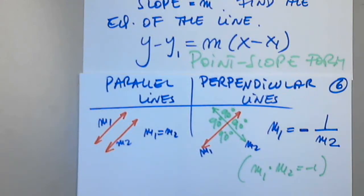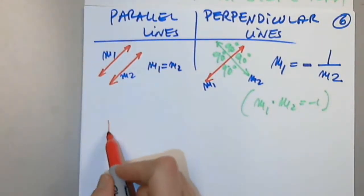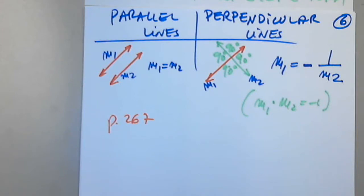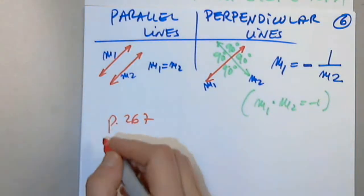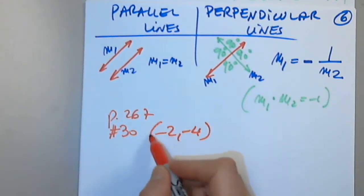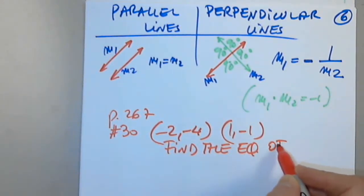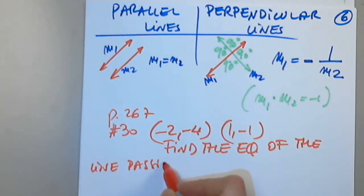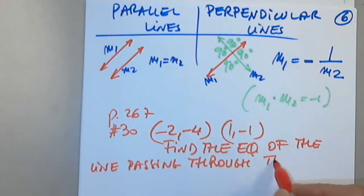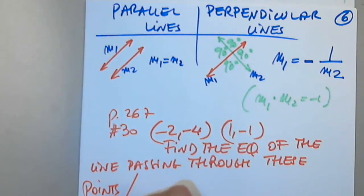Page 2.3 on page 267, problem 30. We're given all the pairs — negative 2 comma negative 4, and 1 comma negative 1. We're asked to find the equation of the line that passes through these points. So I have two points: negative 2 comma negative 4 and 1 comma negative 1, and I'm asked to find the equation of the line passing through them, also called ordered pairs.